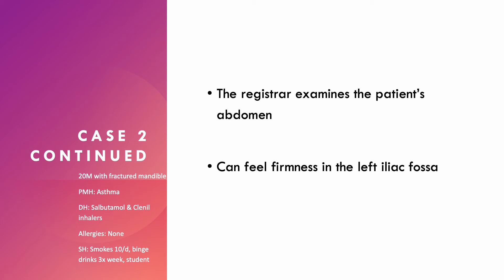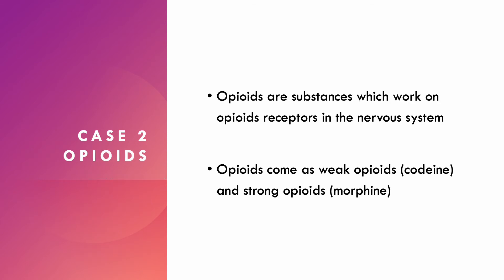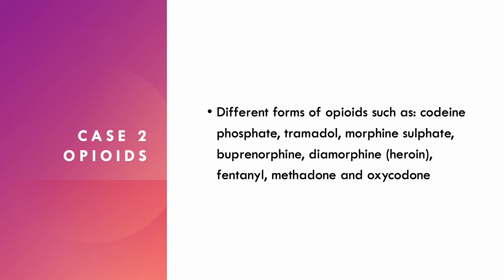The registrar asks you to prescribe a stat dose of senna and lactulose, as well as regular senna and lactulose. Senna is a stimulant laxative and lactulose is an osmotic laxative — they work in different ways to stimulate the bowels. Opioids work on the opioid receptor in the nervous system and can come as weak opioids such as codeine or strong opioids such as morphine. For this reason it's important not to prescribe both codeine and morphine at the same time — prescribe one or the other.